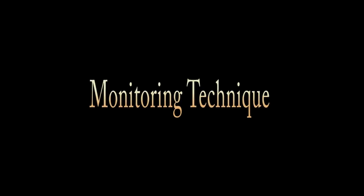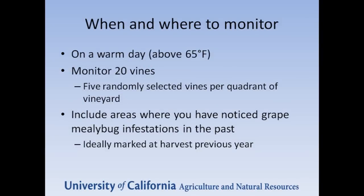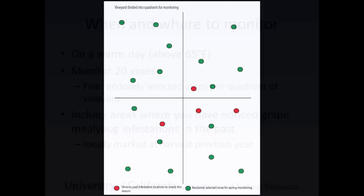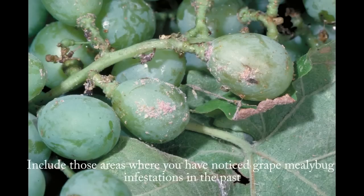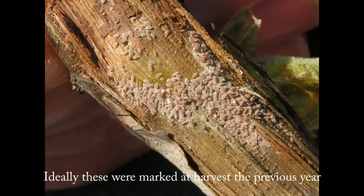Monitoring technique: on a warm day, 65 degrees Fahrenheit or above, monitor 20 vines by looking at 5 randomly selected vines per quadrant of the vineyard. For the best estimate of pest distribution, monitor fewer vines in more locations. Be sure to include areas where grape mealybug infestations have been noticed in the past — ideally, those marked at harvest the previous year.